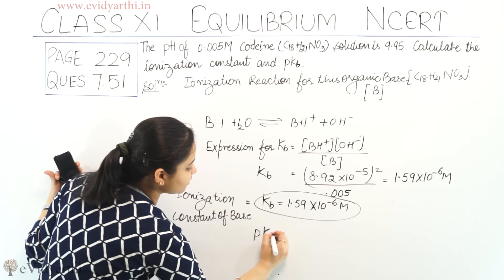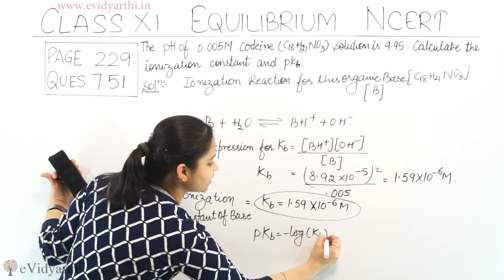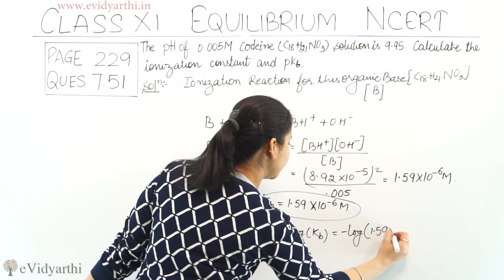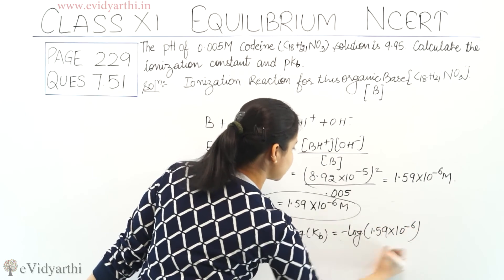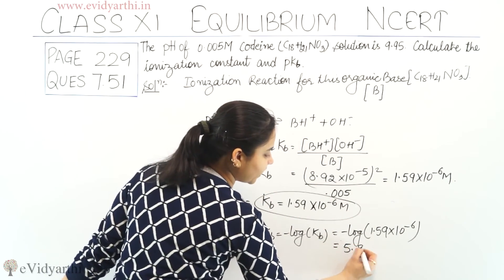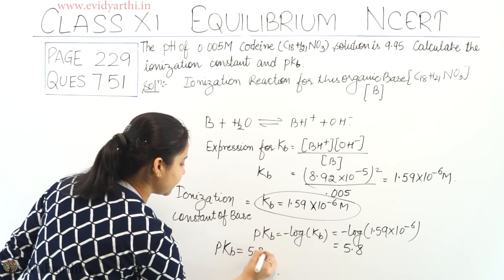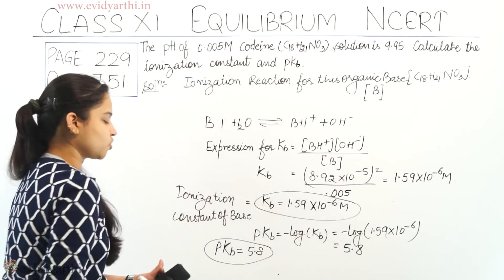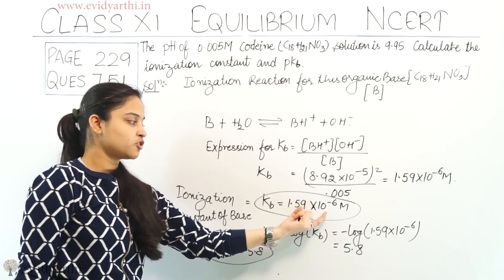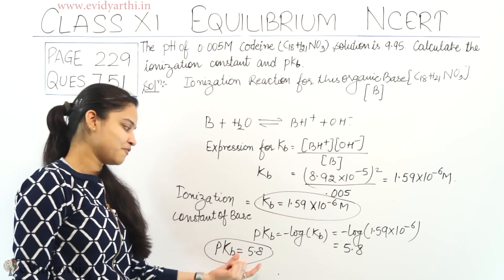Now we need to calculate the value of pKb. pKb is equals to minus log of Kb, which is equals to minus log of 1.59 into 10 raise to power minus 6. When you calculate this, the answer comes to 5.8. So the value of pKb is 5.8. The value of ionization constant Kb is 1.59 into 10 raise to power minus 6, and the value of pKb is 5.8.